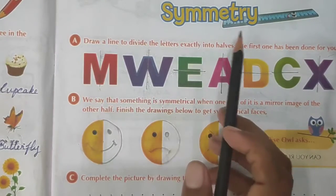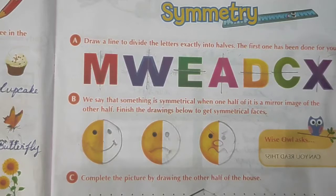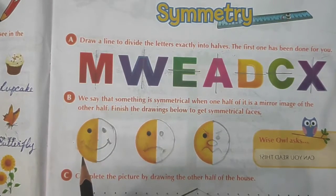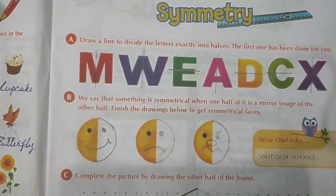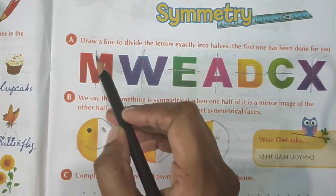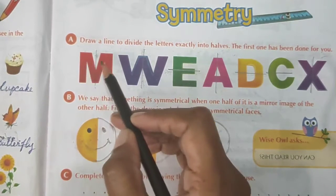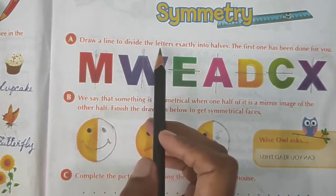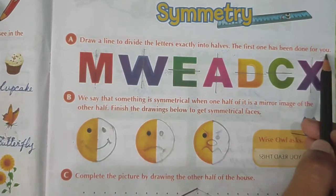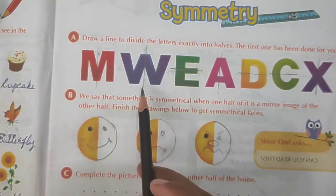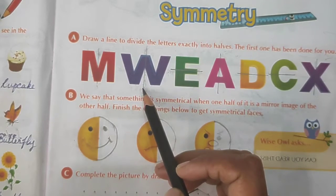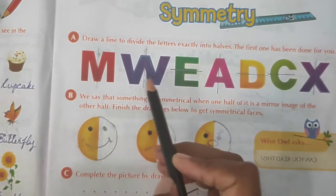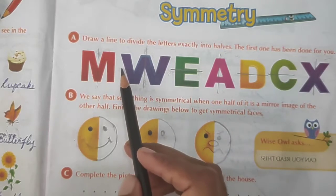The next topic is symmetry. Symmetry means something is symmetrical when it is the same on both sides. To see if an object is symmetrical, you draw a line of symmetry at the center of an object — it shows both sides of the shape exactly the same. This line is called the line of symmetry; it shows both sides of the shape exactly into half. Draw a line to divide the letters exactly into half; the first one has been done for you. We have to draw a line vertically or horizontally.